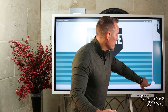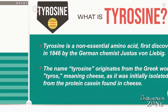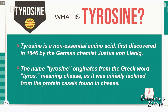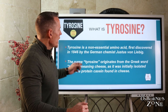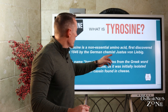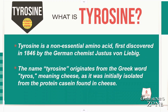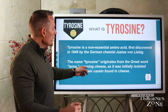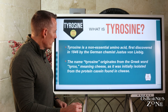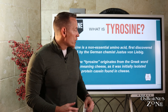What exactly is tyrosine? Tyrosine is an amino acid. It is non-essential, meaning that your body can produce it from other amino acids, but there's a conditional essentiality to tyrosine that we'll get into. It's a non-essential amino acid first discovered in 1846 by the German chemist Justus von Liebig. The name tyrosine originates from the Greek word tyros, meaning cheese, as it was originally isolated from the protein casein found in cheese.